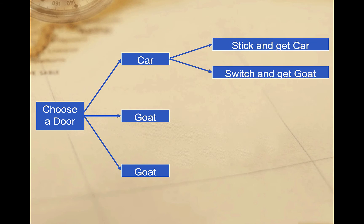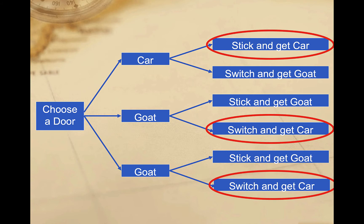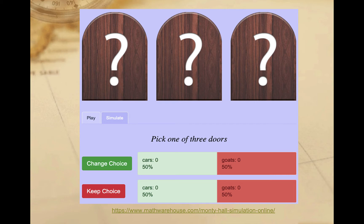If you pick the car with your first choice and you stick, you'll win the car; if you switch you'll lose. But if you chose a goat with your first pick — and remember there was a 66% chance that you did — if you switch you'll win. Thus, 66% of the time you win if you switch, but only 33% of the time will you win if you stick with your first choice. If you still don't believe me, you can try playing the game yourself online by following the link on this page, then come back and watch the rest of the video.